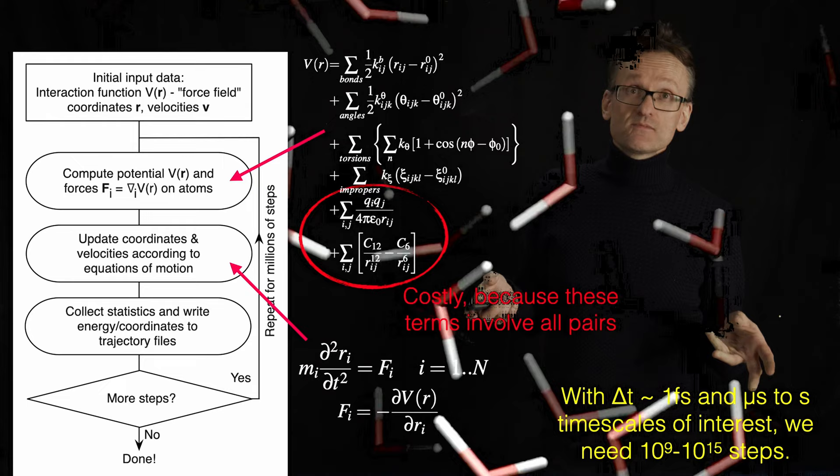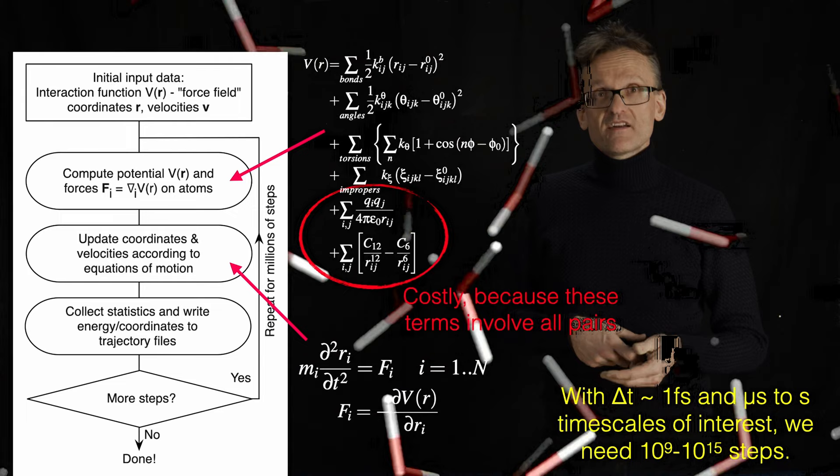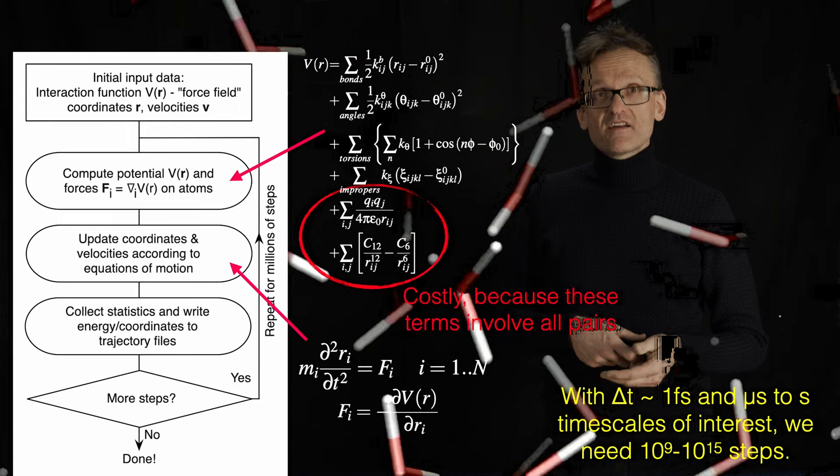But somewhere there, I'm starting having torsions and other things involved that I simply can't remove anymore. So no matter how you slice this, we're going to end up doing billions of time steps to get to interesting timescales. So you're going to need a fast computer here.